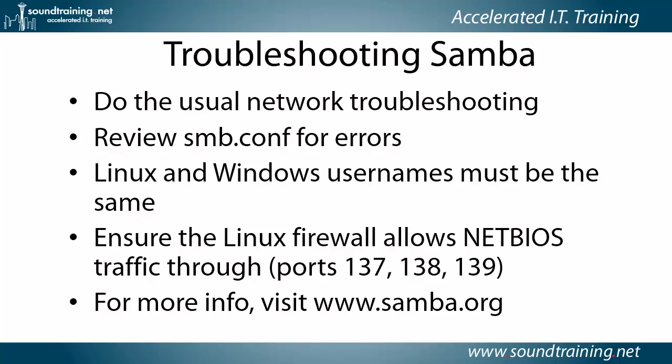Here are some troubleshooting steps in case you run into issues, which can be pretty common in a classroom setting. Do the usual network troubleshooting — make sure cables are correct and try the ping command. Then review smb.conf for errors and typos. Make sure your Linux and Windows usernames are the same — this is probably the most common issue. Also ensure the Linux firewall is allowing NetBIOS traffic through on the standard ports: 137, 138, and 139, both TCP and UDP. You might also need to allow port 445. If you're running CIFS and grep for it in /etc/services, it shows port 3020 as well. For more information, there's a good troubleshooting guide at www.samba.org.